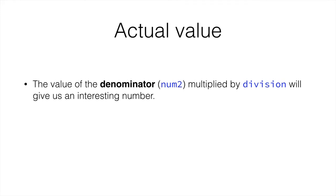The value of the denominator, num2, multiplied by division, will give us an interesting number. So, num2 by division is 3 times 3, which is 9. Num1 minus 9 gives us the remainder, which is 1.